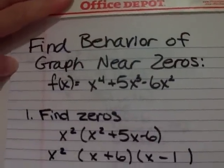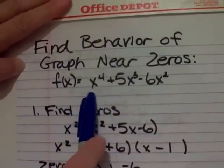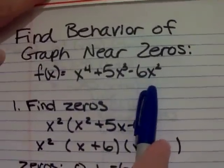Today we're going to find the behavior of a graph near the zeros. So we have our function f of x equals x to the 4th plus 5x to the 3rd minus 6x squared.